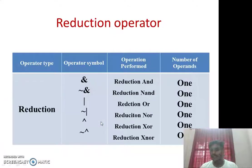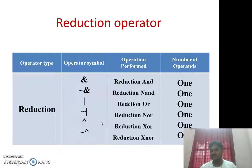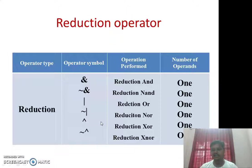Now let us go to the reduction operator, which is slightly different from the bitwise operator. Here it operates on a single variable. For example, if a is an 8-bit vector, using &a performs an AND between all bit positions — bit 7 AND bit 6, the result AND bit 5, and so on down to bit 0. The final single-bit result is the output. This reduction operates across the full vector length of the single variable.